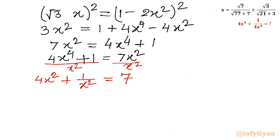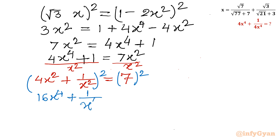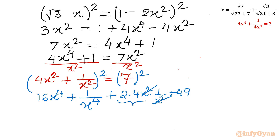Now I will square once again. Using the formula a squared plus b squared plus 2ab on (4x squared plus 1 over x squared) squared, we get 16x to the power 4 plus 1 over x to the power 4 plus 2 times 4x squared times 1 over x squared equal to 49. Canceling x squared with x squared leaves 8. Moving 8 to the right hand side gives 16x to the power 4 plus 1 over x to the power 4 equal to 49 minus 8, which equals 41.